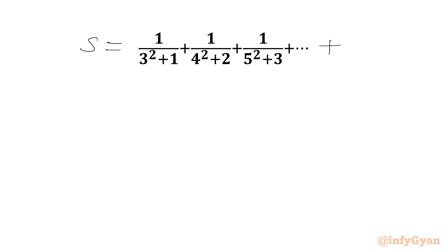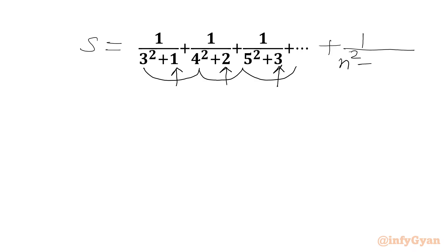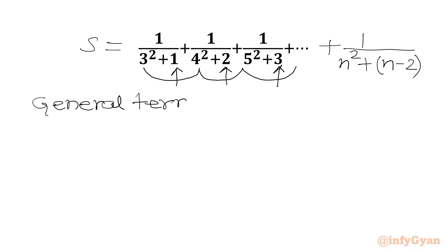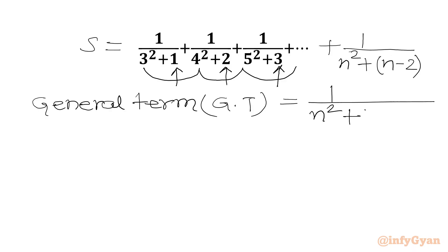Now we will write our general term. Considering all the square numbers: 3, 4, 5, 6, 7... we notice each denominator has a number which is 2 smaller than the square. So we can generalize the expression as n² plus a number which is n minus 2. The general term would be 1/(n² + n - 2).